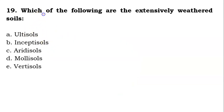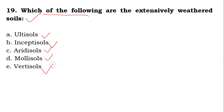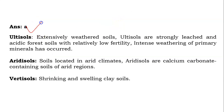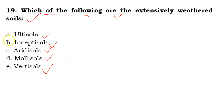The nineteenth question: which one of the following are the extensively weathered soils? Options are Ultisols, Inceptisols, Arid soils, Mollisols, or Vertisols. The answer is A — Ultisols are extensively weathered soils. Ultisols are strongly leached and acidic forest soils with relatively low fertility, in which intense weathering of primary minerals has occurred.